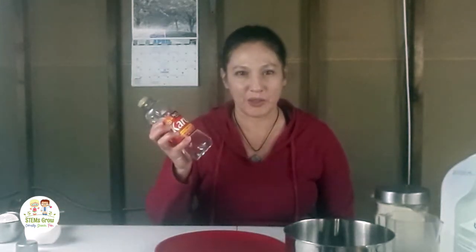For the next unpoppable bubble, instead of sugar we're going to use corn syrup. Distilled water sometimes helps with these types of bubbles because without minerals in the water — like you might have in tap water or bottled water — you would have a better quality bubble. I'm going to use one fourth of a cup of corn syrup and then a half a cup of dish soap. We're going to wear gloves when we handle this unpoppable bubble because the natural oils in our hands could actually disrupt the surface tension of the bubble and pop it before we want it to.